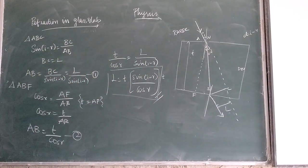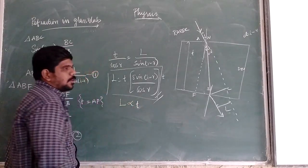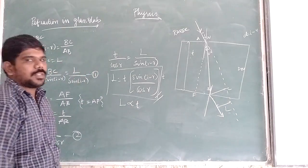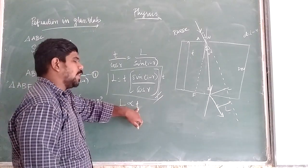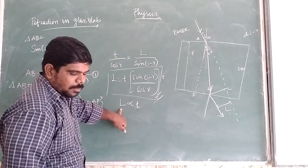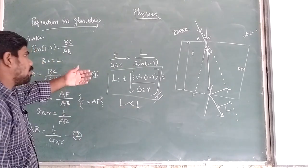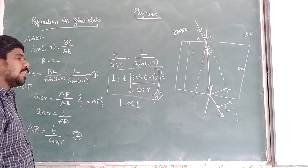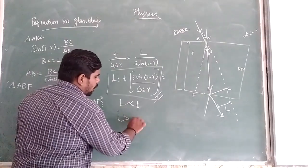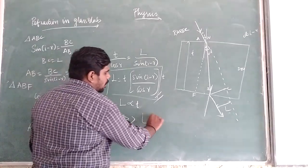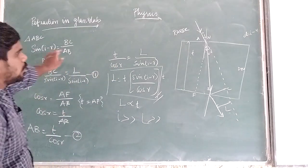The lateral displacement is directly proportional to the thickness of the glass slab. When the thickness increases, the lateral displacement also increases. Similarly, when the angle of incidence is greater, the lateral displacement is also greater.